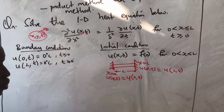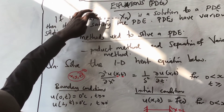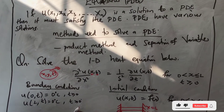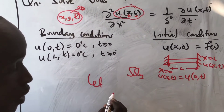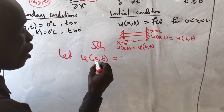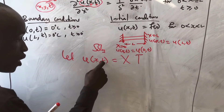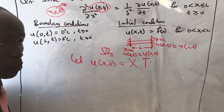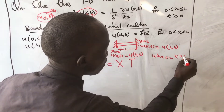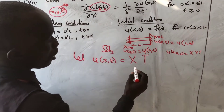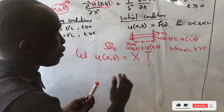The first step is to use the product method. We let u(x, t) = X(x) · T(t), where X is a function of x alone and T is a function of t alone. This is equation (1). For a two-dimensional problem such as u(x, y, t), you would write u = X(x)·Y(y)·T(t) similarly.